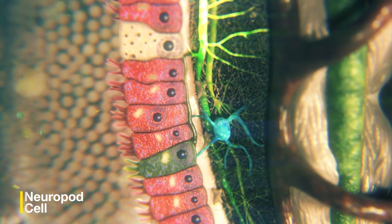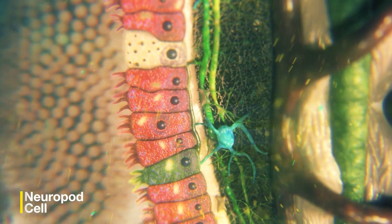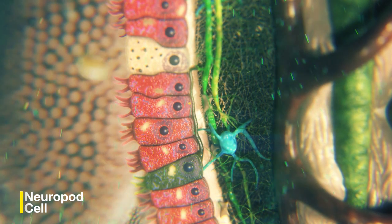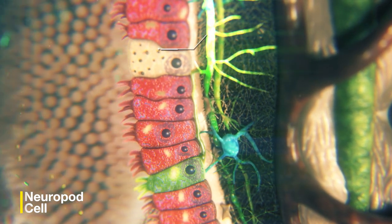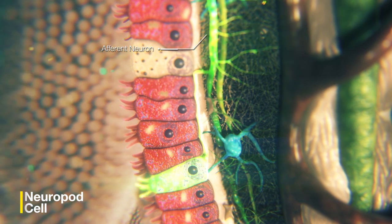Inside neuropod cells, signals from stimuli are converted into tiny electrical pulses. These pulses propagate via synapses onto the afferent neuron of the vagus nerve.